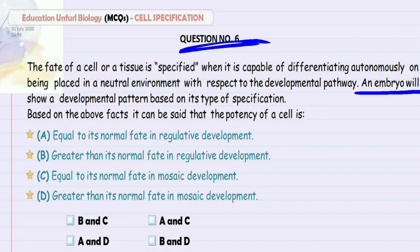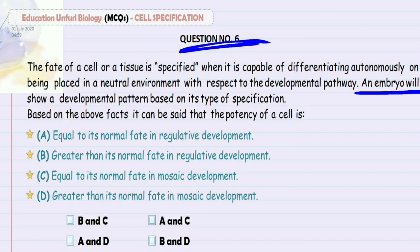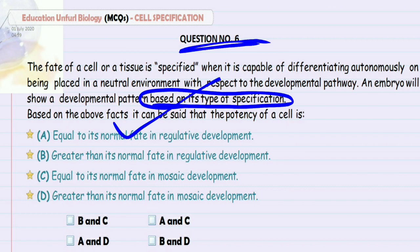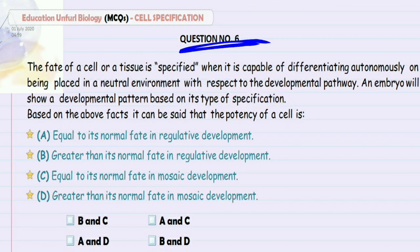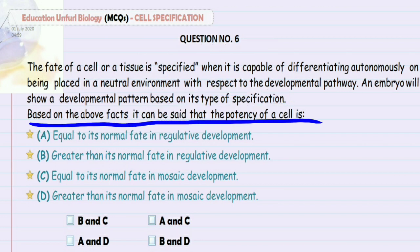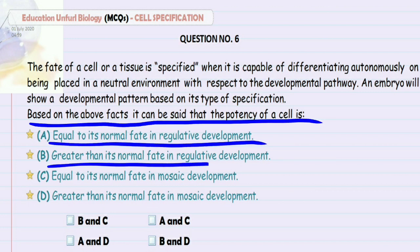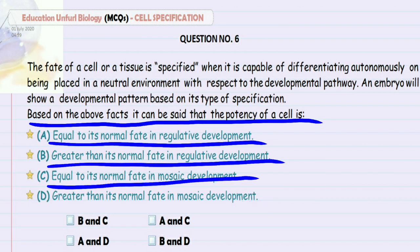An embryo will show a developmental pattern based on its type of specification. In a neutral environment, if it's autonomous, it will go that way; if it's conditional, it will follow the corresponding rules. Based on the above facts, it can be said that the potency of a cell is: equal to its normal fate in regulative development, greater than its normal fate in regulative development, equal to its normal fate in mosaic development, or greater than its normal fate in mosaic development.